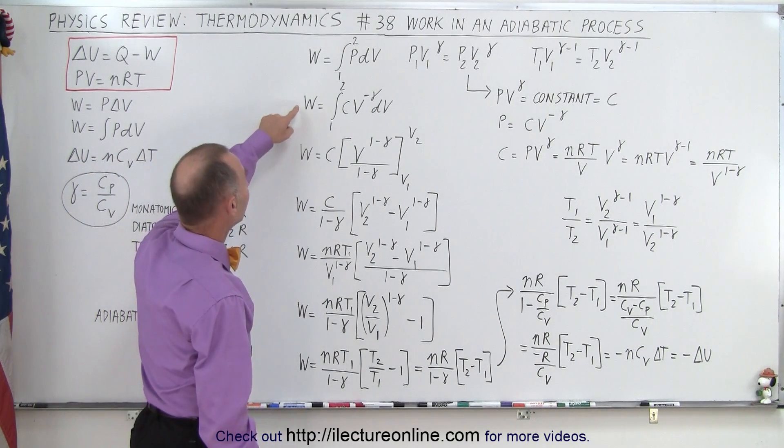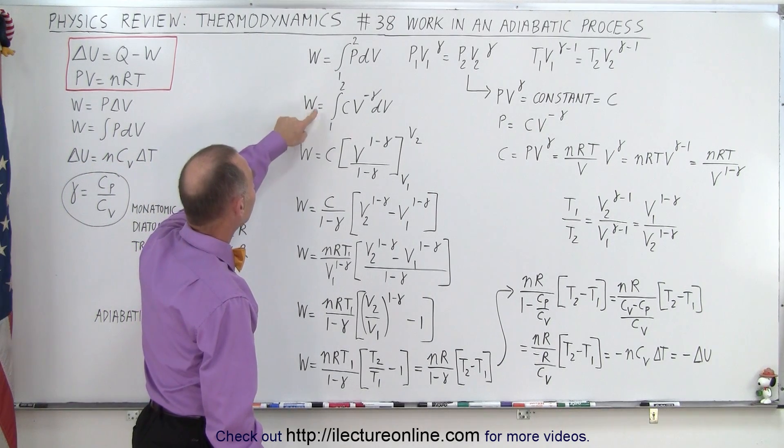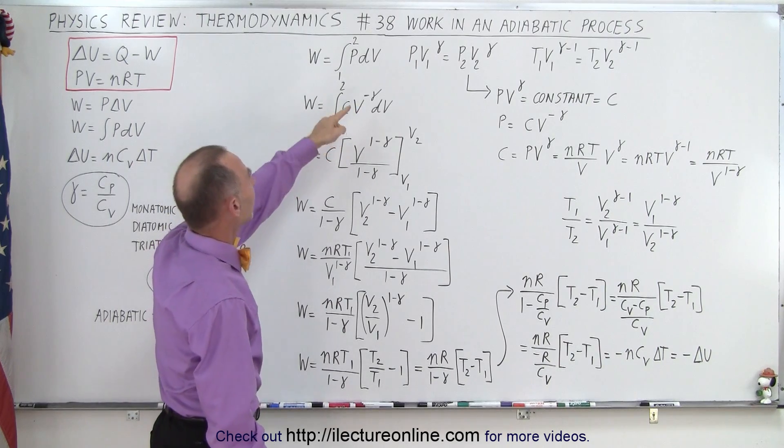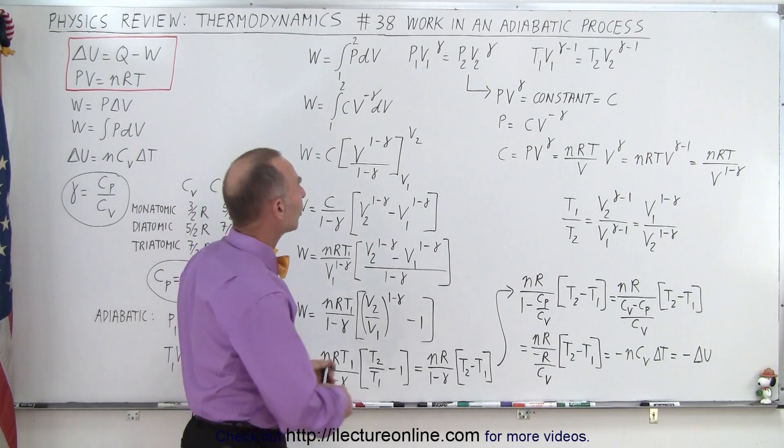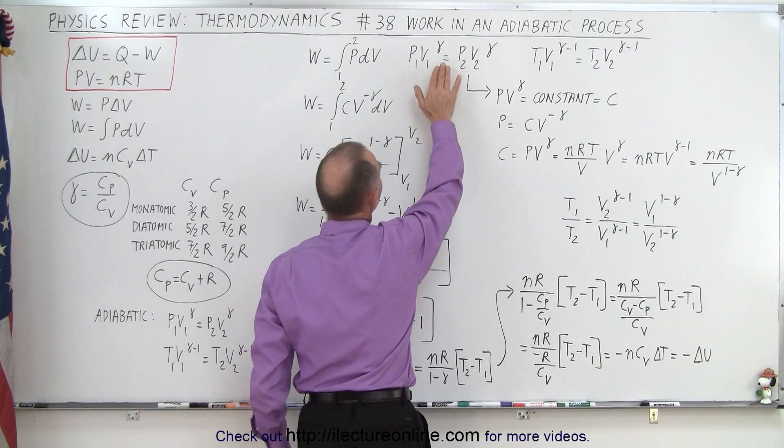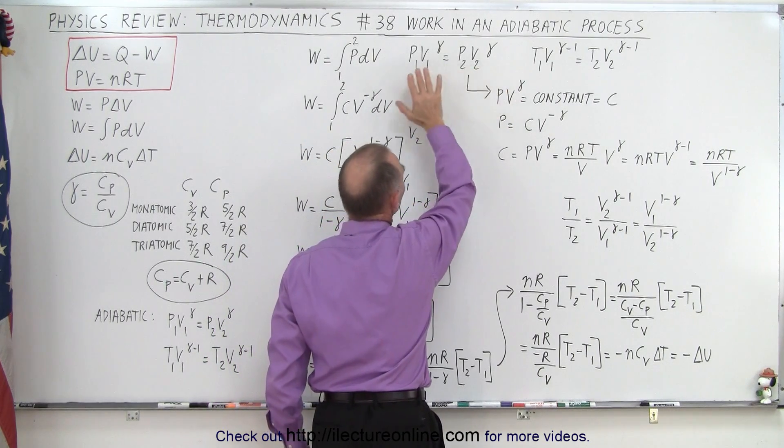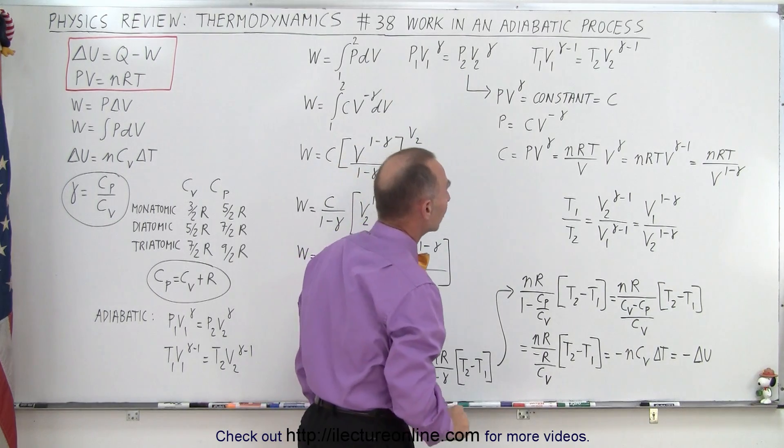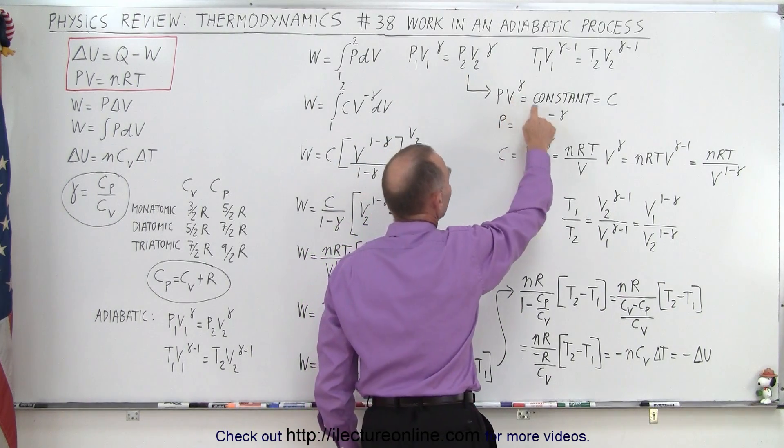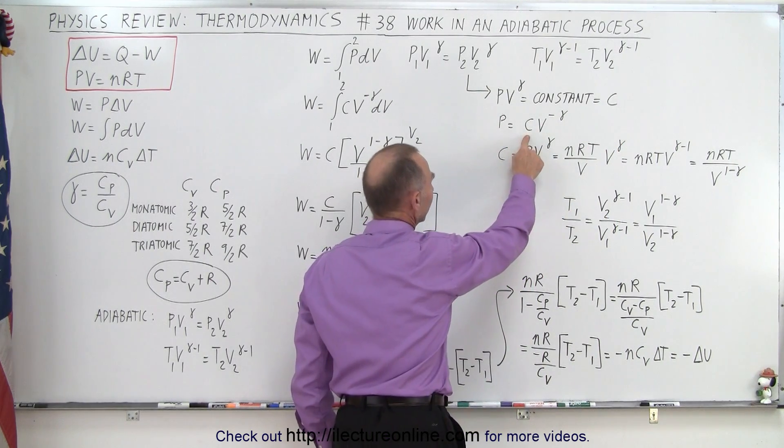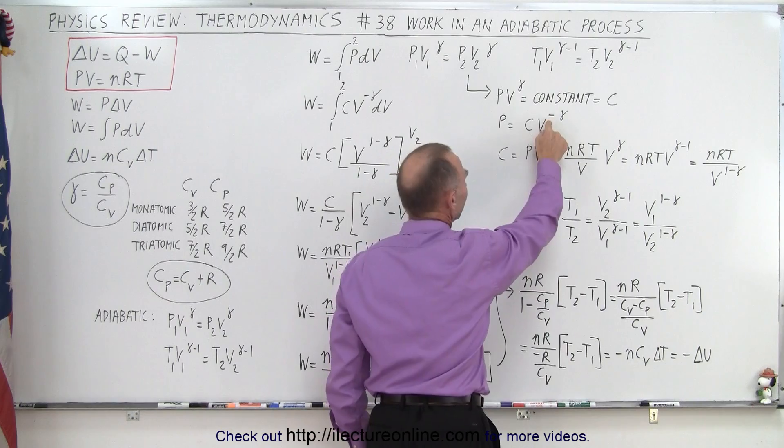So what we do here is we then say that the work done is equal to the integral of C times V to the minus gamma. Where did this come from? How did P become this? Well, we use this equation, and we know that since P1V1 to the gamma equals P2V to the gamma, we know that this is equal to a constant. So PV to the gamma must be a constant, so let's call that a C. And so we can write that P is equal to the constant times V to the minus gamma.